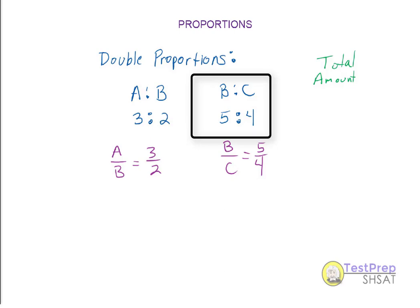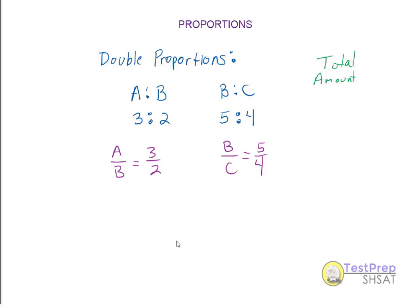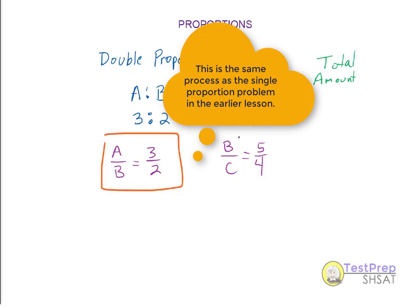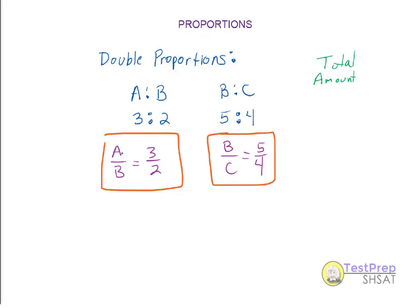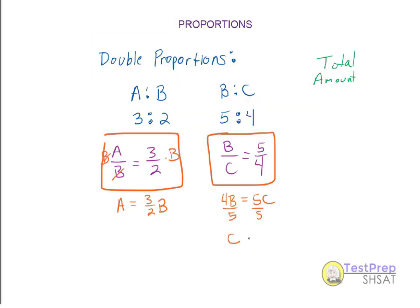Suppose I had two different proportions: A to B is 3 to 2, and B to C is 5 to 4. Each of those I can set up as separate proportion equations. A to B is 3 to 2, so A divided by B equals 3 divided by 2. And B to C is 5 to 4, so B divided by C equals 5 divided by 4. I'll solve for one variable in terms of another — multiplying by B on both sides and solving for C in terms of B. Dividing by the coefficient of C, we get C equals 4 fifths B.